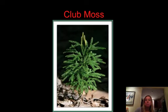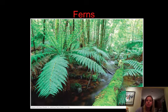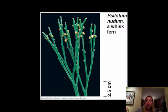Moving on to seedless vascular plants, we've got club moss, ferns, and whisk ferns. You can see why they call it a whisk fern — it looks like a whisk. There's also horsetail, though there wasn't a picture included for that one.